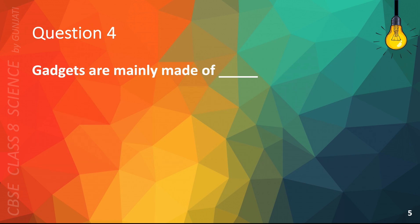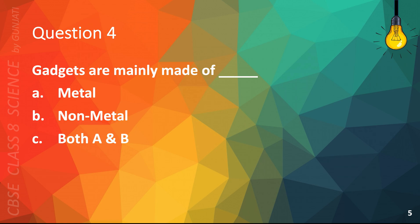Question 4. Gadgets are mainly made of — A, metal; B, non-metal; C, both A and B; or D, none of the above. The correct answer is A, metal.